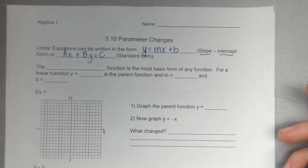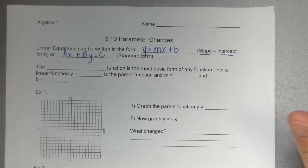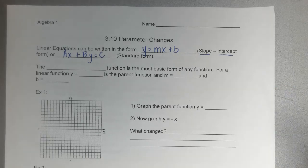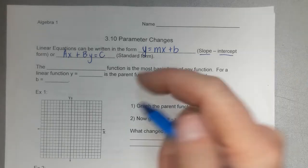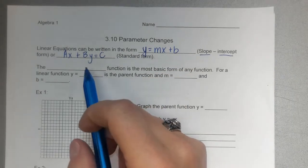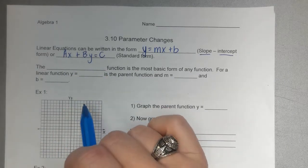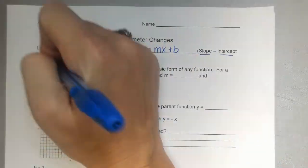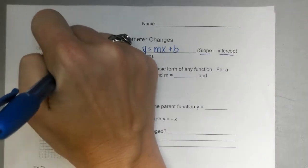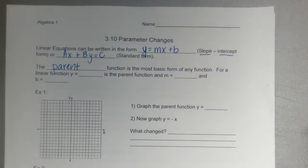Just like in your own family, usually the parent is the head of the household, and the offspring come from parents. Well, in functions, we call the head function — the most basic form of any other function — the parent function. The parent function is the most basic form of any function.